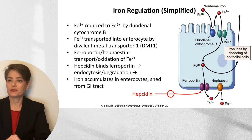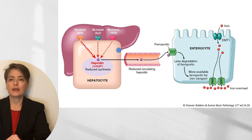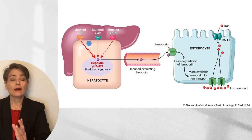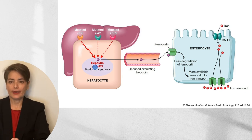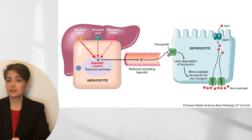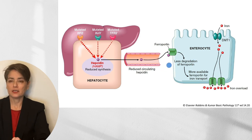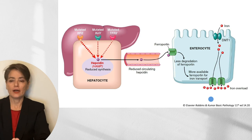Another figure from Robbins-Kumar shows the hepatocyte with HFE, HJV, and TFR2 acting as a complex. Only one needs to be mutated — HFE is most frequently mutated in hereditary hemochromatosis. Mutation of any of these proteins reduces synthesis of hepcidin, resulting in reduced circulating hepcidin. Because so little hepcidin is available to bind ferroportin, most ferroportin remains viable, allowing iron entering the enterocyte to pass into the blood, leading to iron overload.